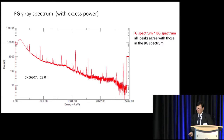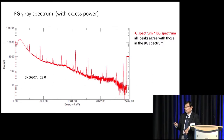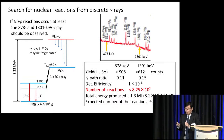If we change to the foreground gamma spectrum — which is taken during the time we are producing this power — essentially there is no change. The foreground spectrum is almost the same as the background spectrum, and all peaks agree with those in the background spectrum. Therefore, we have to calculate how much gamma rays there are; we have to search for the upper limit of these gamma ray transitions by assuming that a specific reaction is occurring.